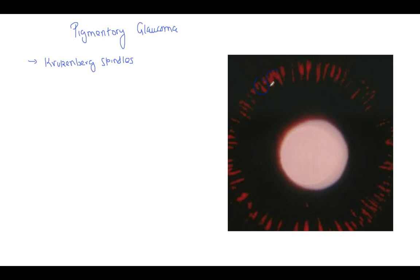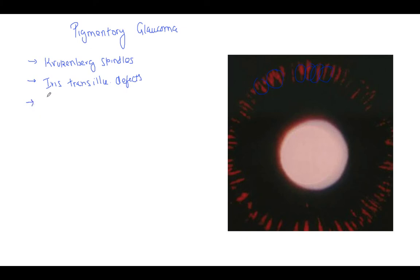Can you see here these defects — these orange lines coming from the iris? These are called iris trans-illumination defects. These iris trans-illumination defects are pathognomonic of pigmentary glaucoma, as they are caused by the rubbing of the iris. This also leads to a very highly pigmented trabecular meshwork.